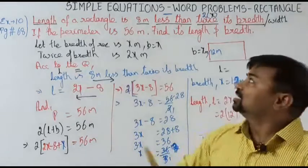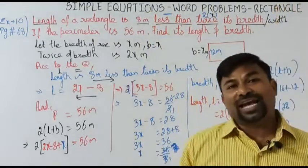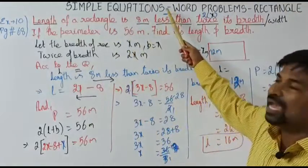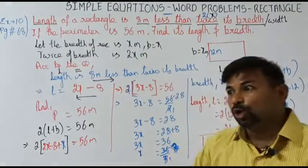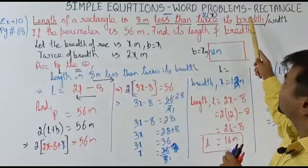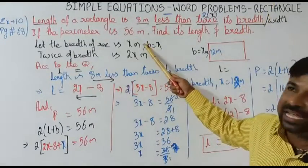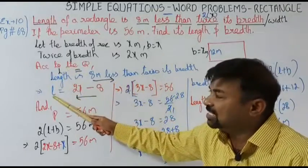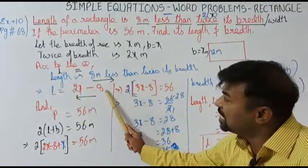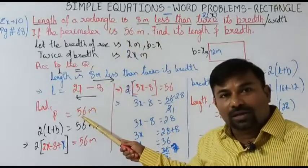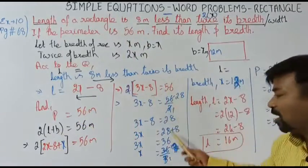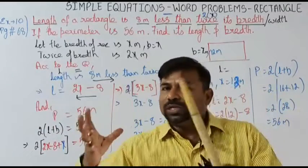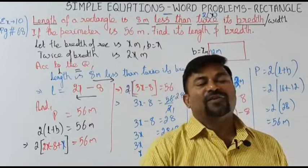So let me explain the concept. For simple equations word problems with rectangles: pick the words convertible to mathematical terms — 'less than' means minus, 'twice' means 2 into bracket. Identify which term is compared to which — length is compared to breadth, so take breadth as the variable x. Length is 2x minus 8. Use the perimeter formula 2(l+b), plug in values, solve for x to get breadth, then calculate length.